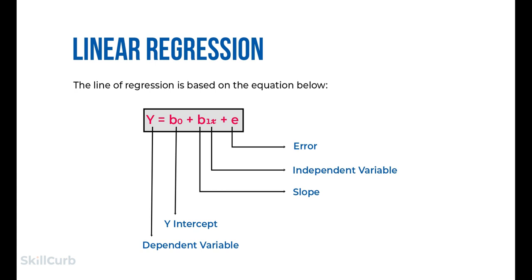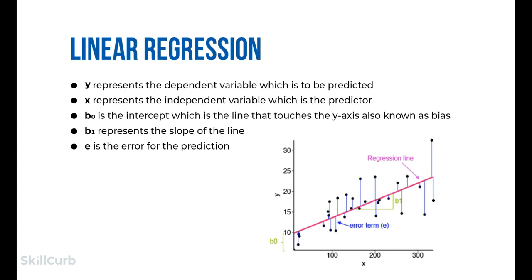The equation for finding the best fit line of regression involves several variables. While training the model, x is our input training data; in the univariate case it is one input variable. Y is the labels to the data used in supervised learning. When training, the model fits the best line to predict y for a given value of x by finding the best b0 and b1 values. b0 is the intercept, b1 is the coefficient of x (also called the slope), and e is the error of prediction.